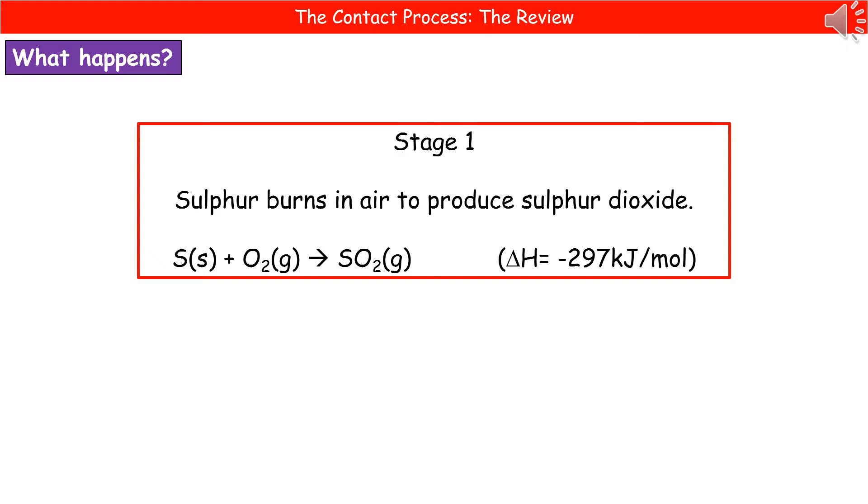Stage one is where we start off with sulfur and air as our raw materials. We're going to burn the sulfur in air to produce sulfur dioxide. So stage one: sulfur plus oxygen makes sulfur dioxide. Sulfur has the symbol S and that's a solid at room temperature. Oxygen, O2, always goes around as a diatomic molecule and it's a gas. That makes sulfur dioxide, which, as the name suggests, is SO2, and that's a gas.